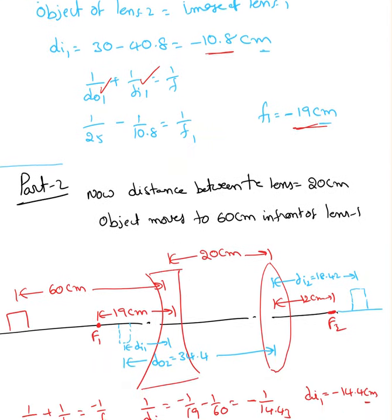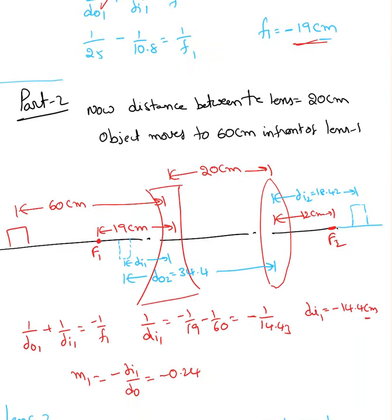Previously the object was 25 cm; now I moved it to 60 cm. I know f1 is 19 cm, f2 is 12 cm. This data is from the previous case.